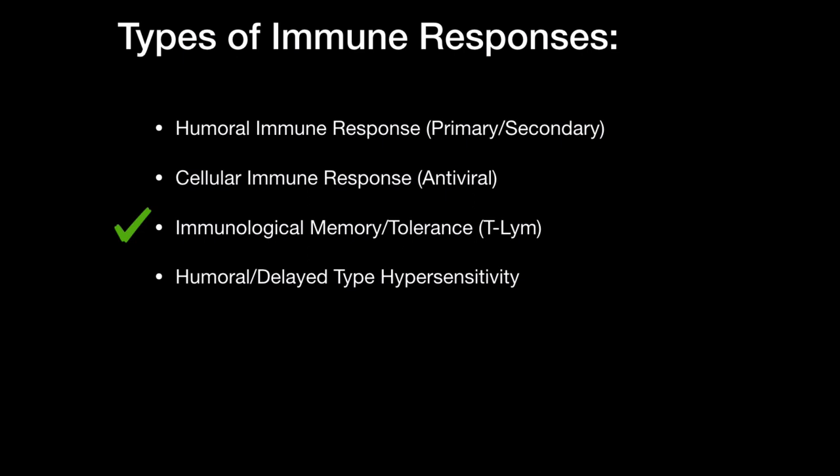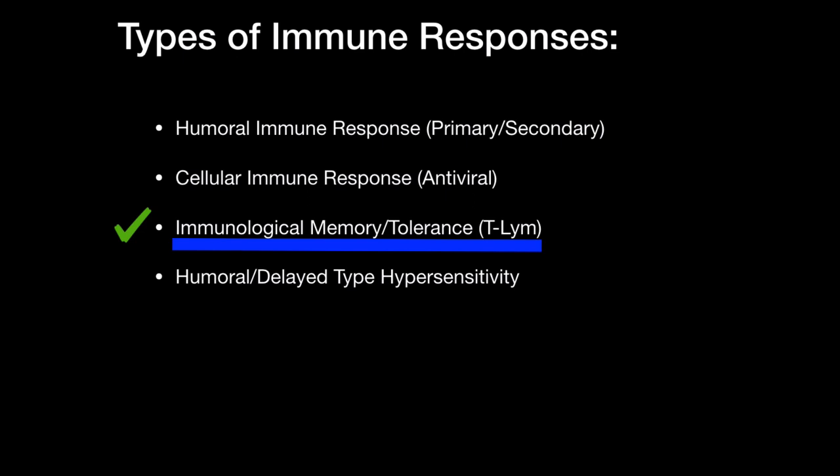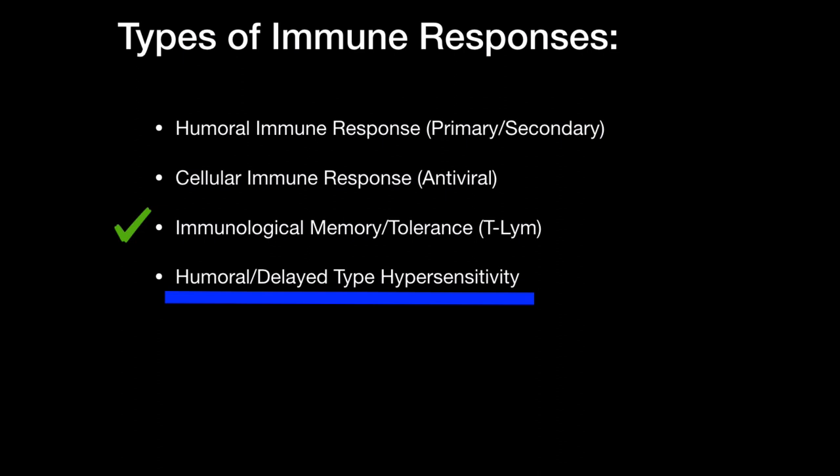Hello again. This video is going to be about the humoral immune response. There are four main types of immune responses: humoral immune response, including primary and secondary; cellular immune response, which includes antiviral; immunological memory or T-cell tolerance, which we've already talked about; and hypersensitivity. In this video, we'll be looking at the humoral immune response.